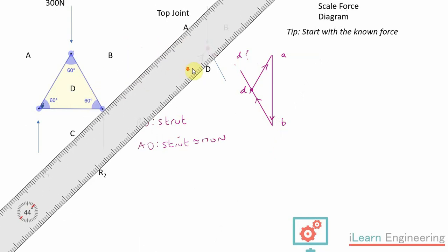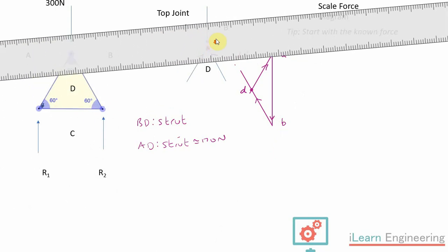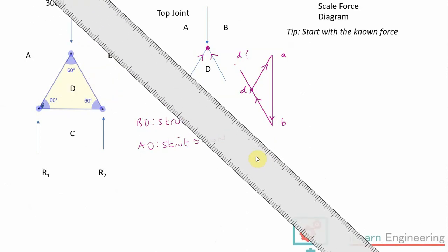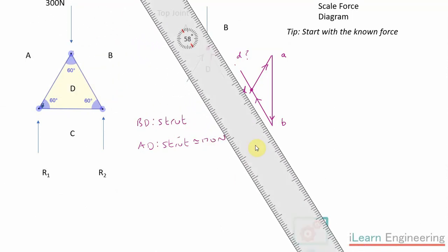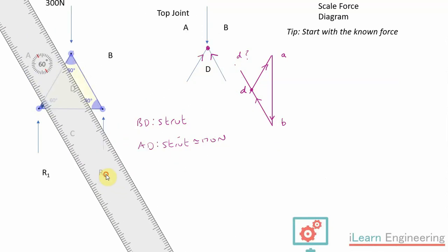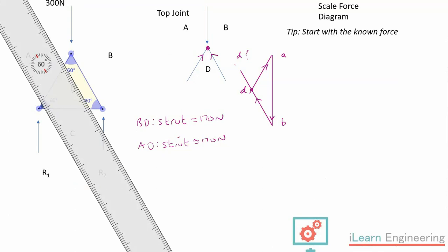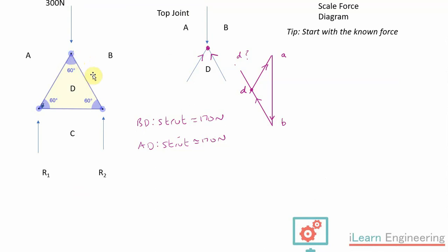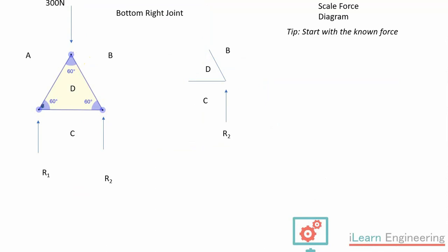Okay, so we're going to do the same for BD. So we need to bring this around like this and measure it according to the scale that you set, and that looks around about the same, about 170. So what we're going to do now is we now move on to the next joint, which will be this one down here. So this is the bottom right hand joint. And as before, top tip is to start with the known force. Well the known force is the BD, and that was what we found in the previous joint diagram. We know from that previous analysis that BD is a strut, which means it points into that top joint, as did AD.